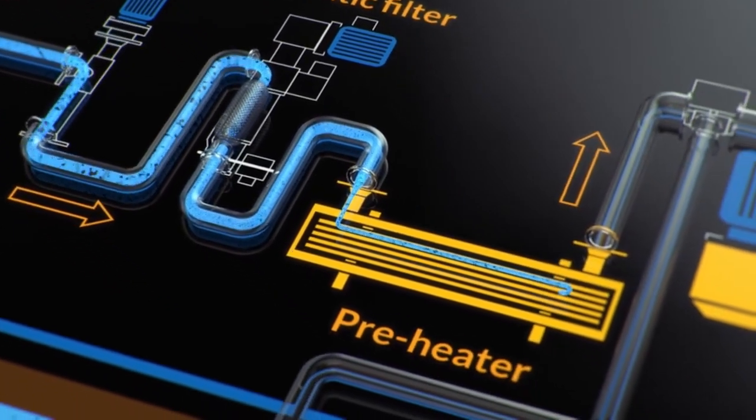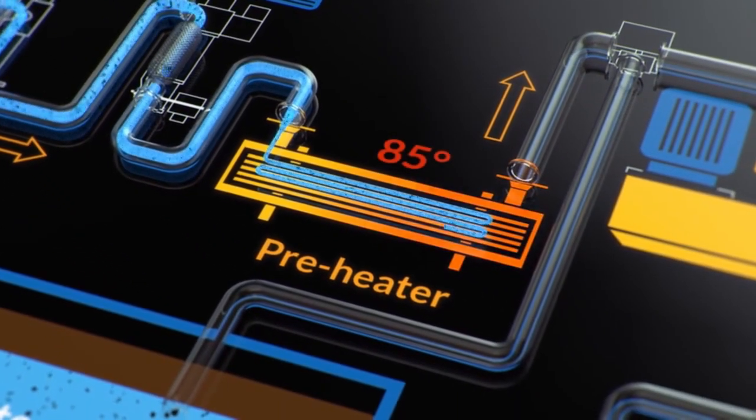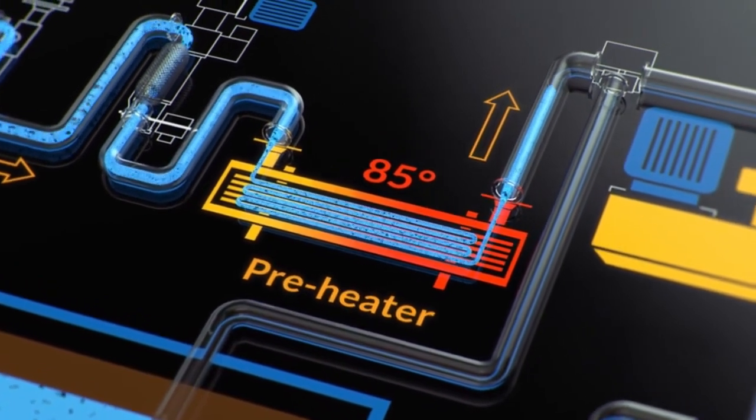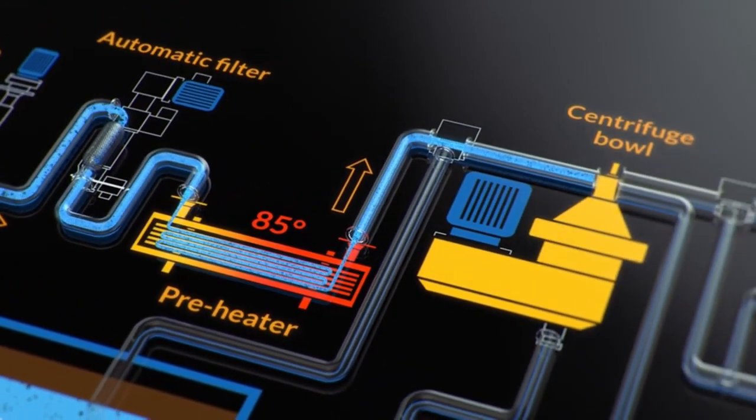The bilge water then goes through a preheater, where it is heated to about 85 degrees Celsius, and via the feed valve to the separator.